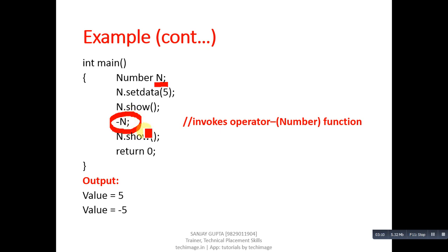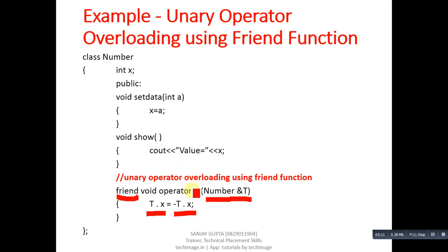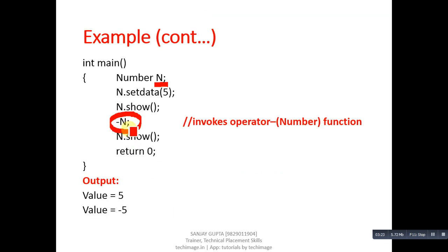n is received inside t. If we change the value of t, the value of n is automatically changed because we are using call by reference. After this, n.show() will print the changed value on the console. You can see the output: first the value of n was five, and after overloading it becomes minus five.